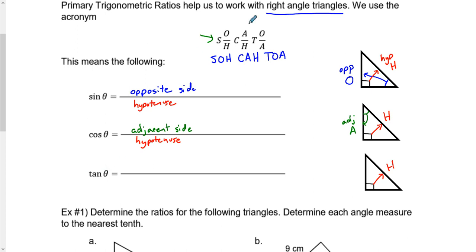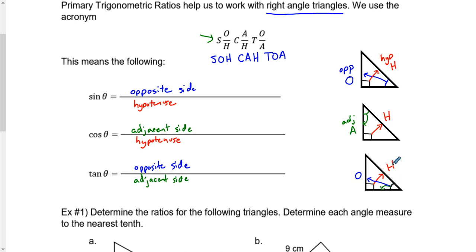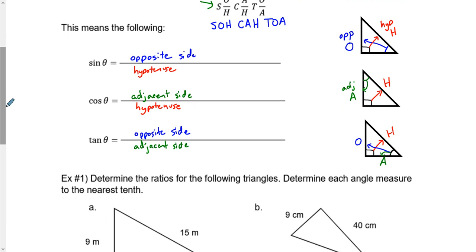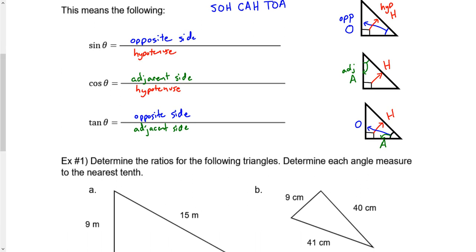The tangent ratio uses O and A, where O stands for opposite and A stands for adjacent. So tangent equals the opposite side divided by the adjacent side. If we're talking about this angle, the side directly across from it is our opposite, and the side directly attached to it that is not the hypotenuse is the adjacent side. Now that we have that information, we'll talk about using these ratios and finding the angles.